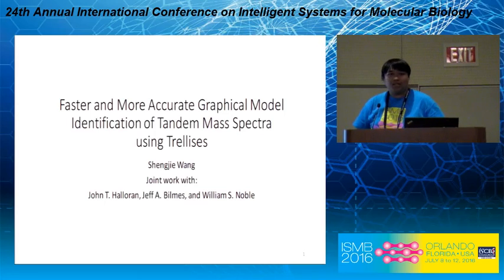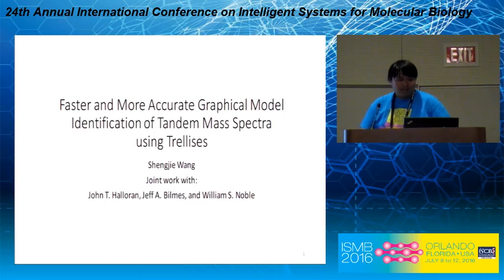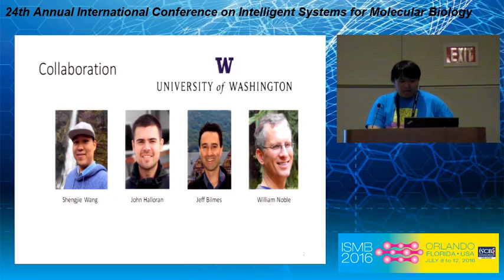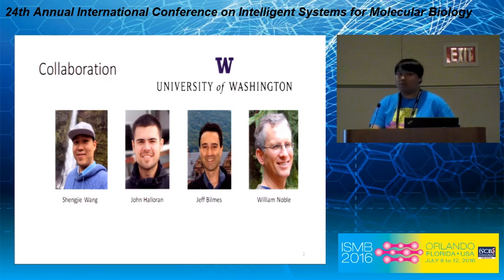I'm going to present our work on faster and more accurate graphical model identification of tandem mass spectra using trellises. I collaborate with John Halloran, Professor Jeff Bilmes, and Professor William Noble on this work. We are all from the University of Washington.